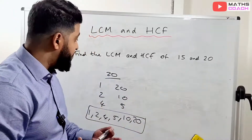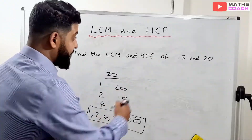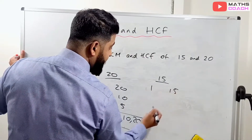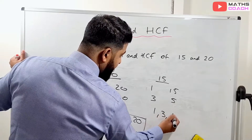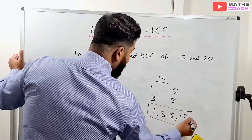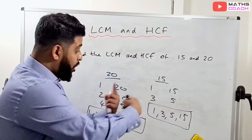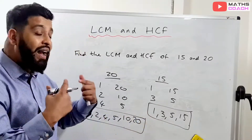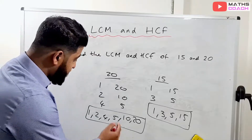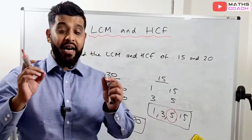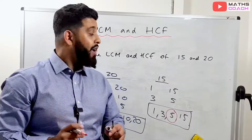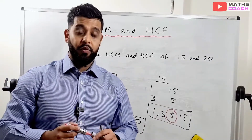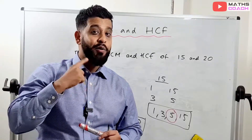Now let's do the factors of 15, since we're using that number anyway. The factors of 15 are 1 and 15, and 3 and 5 — so: 1, 3, 5, and 15. When a question asks for the highest common factor of 20 and 15, you look for the highest number in both lists, which is 5. But I said I'd show you a method to find both HCF and LCM — one method, two birds with one stone.